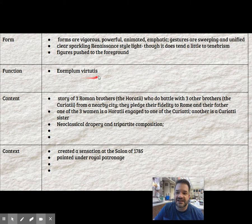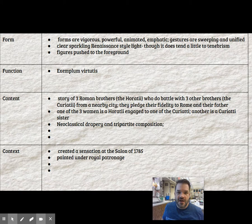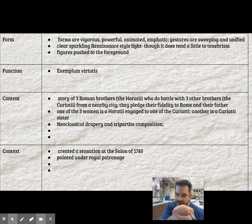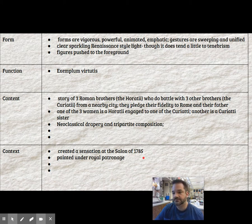The idea is that it's an exemplum virtutis — the function of this picture is to make sure you understand how to be a good citizen. They're looking back to Rome: what would a good Roman citizen do? How do you be a good French citizen? By eschewing effeminate luxury, by getting rid of the ostentatious display of wealth — you should pare down, simplify your life, and be a good man. It was created in 1784, displayed in 1785, and it was a sensation.